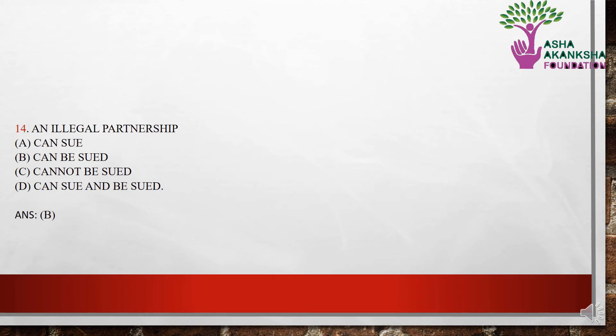The next question is: an illegal partnership — (a) can sue, (b) can be sued, (c) cannot be sued, or (d) can sue and be sued. The correct answer is option B — an illegal partnership can be sued.